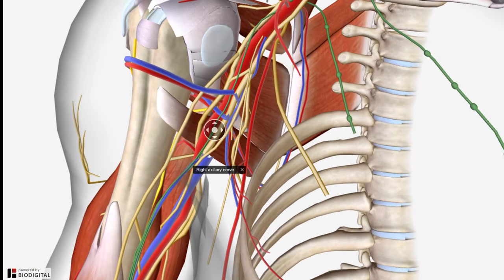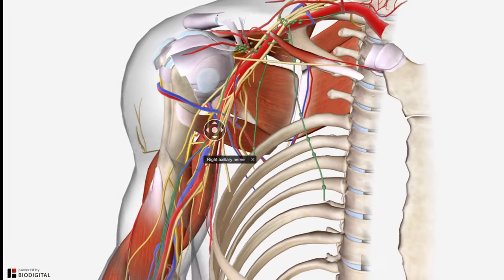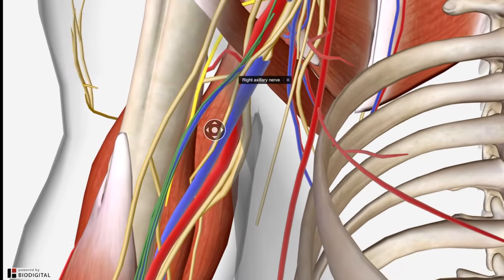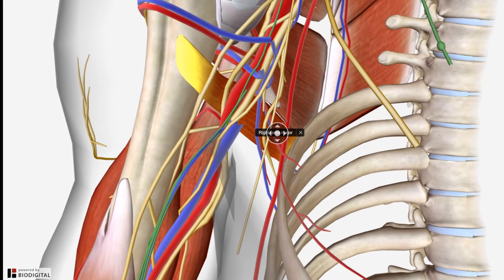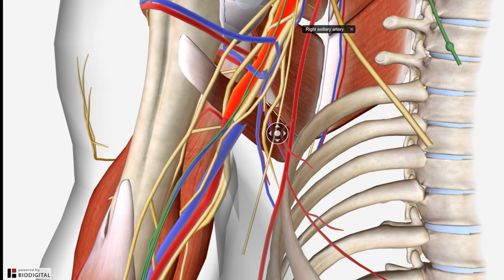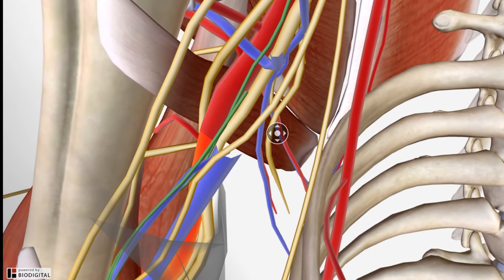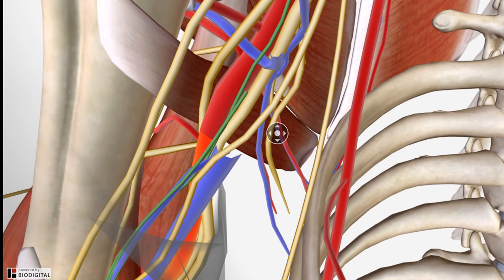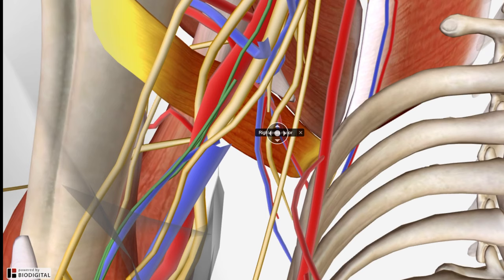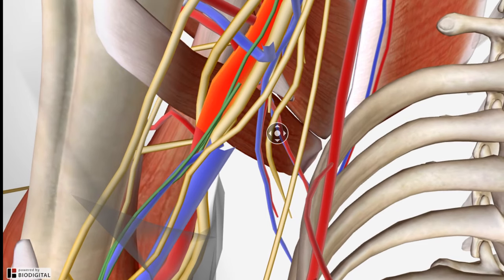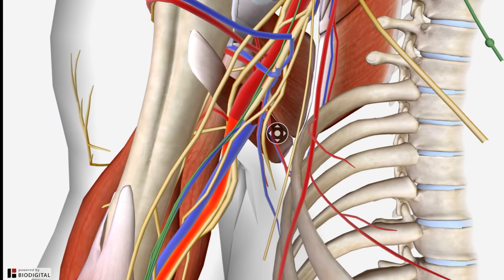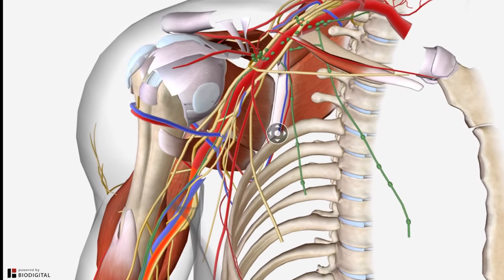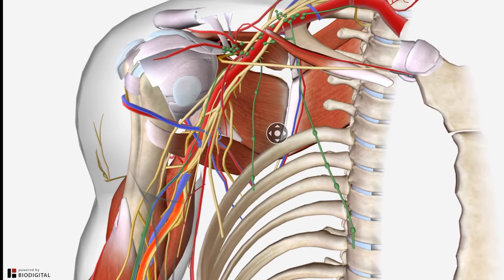This was a general introduction to the blood supply of the upper limb. We started with the subclavian artery, which became the axillary artery. Another important landmark: at the level of the inferior border of the teres major muscle, the axillary artery ends and the brachial artery begins. So the teres major is a great landmark for that transition. We'll cover more of the arm's blood supply in future videos, but for now this gets you introduced to the axillary blood supply and ready for lab.